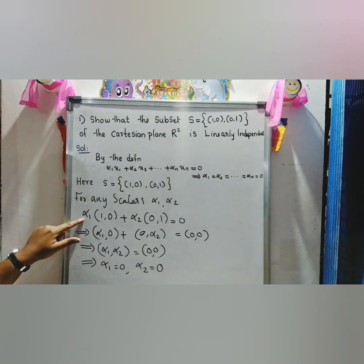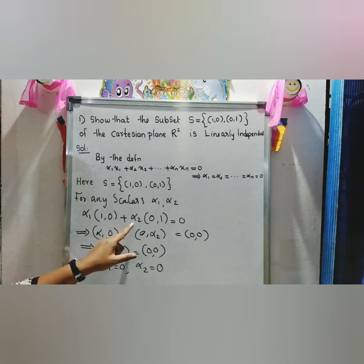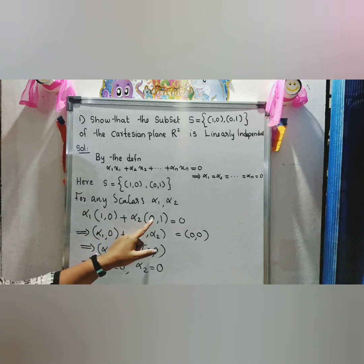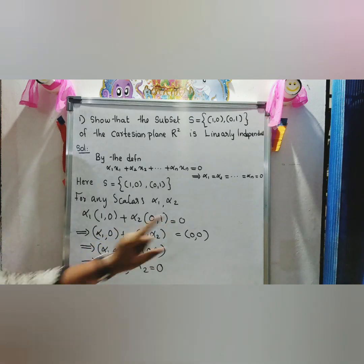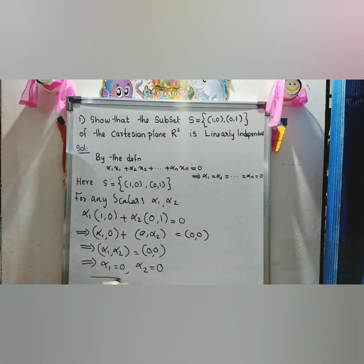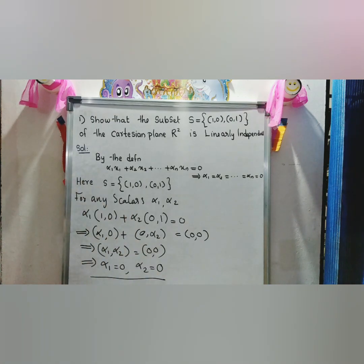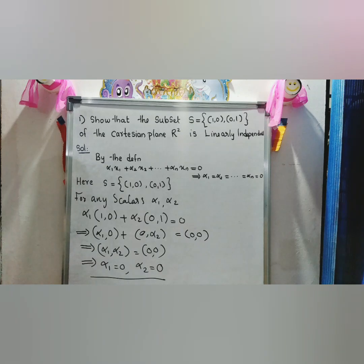Therefore, α₁·(1,0) + α₂·(0,1) = 0 implies α₁ = 0 and α₂ = 0. Hence S is linearly independent.